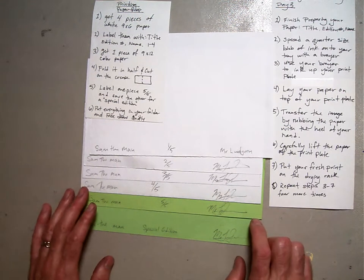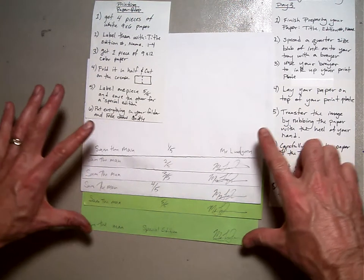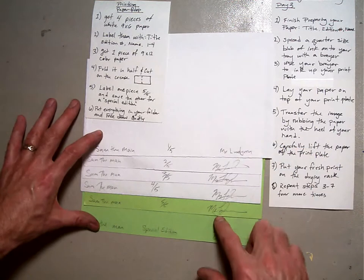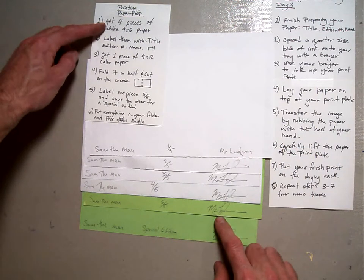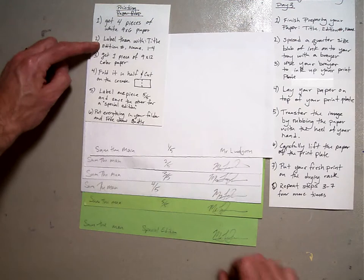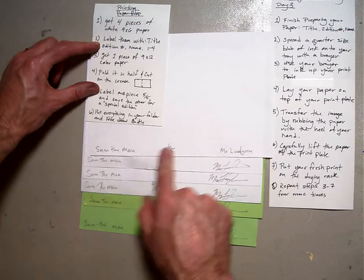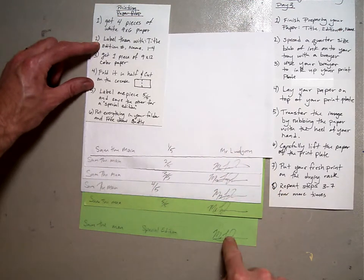Number one, you're going to need to prepare your printing paper. You're going to need four pieces of six by nine paper. You're going to need to label them with the title, the edition number, and your name.